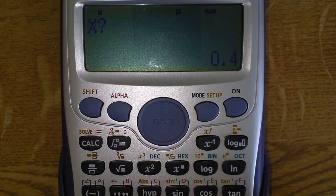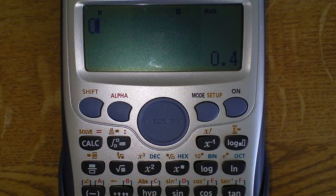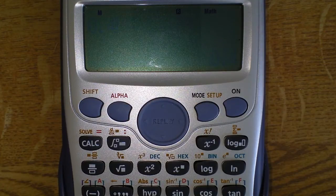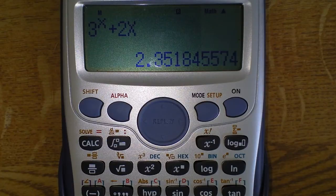We're not going to press equals because we want to tell it what to calculate, so we press the calc button. It's asking us what we want x to equal. Well, in this case we wanted it to equal 0.4. Press the equal sign; it puts 0.4 into that equation and it gives you the answer of 2.35.